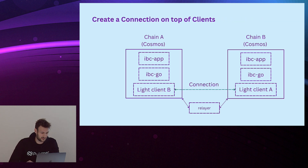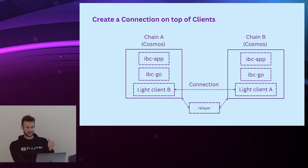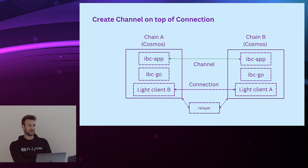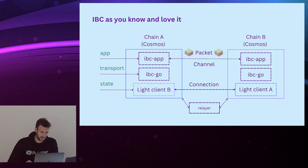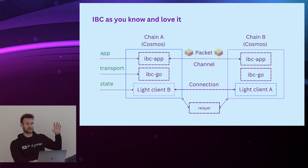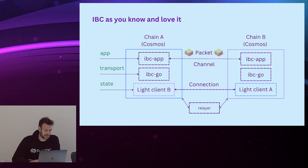With IBC, when we have the light clients on-chain we can build a connection on top, and then we can create channels on top. IBC has three main abstraction layers: clients, connections, and channels. So this is just an overview of IBC — two Cosmos chains, light clients, transport layer, applications, connections, channels, and you can send packets.